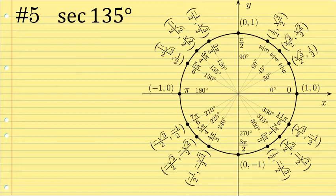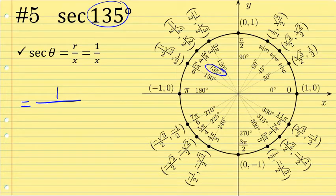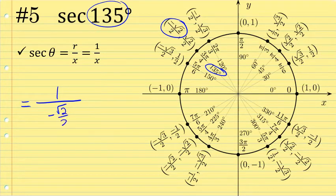For our fifth example, let's look at a secant. The secant ratio is r over x, and since we're on the unit circle where the radius is one, this will be one over x. At 135 degrees, the associated x-coordinate is negative √2/2, so the secant of 135 degrees is one over negative square root of two over two. This is the value, but it's a complex fraction that is also not rationalized.